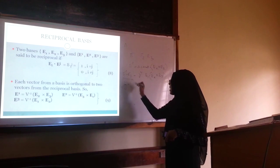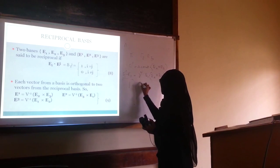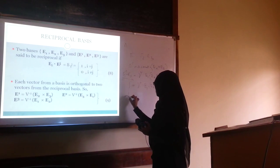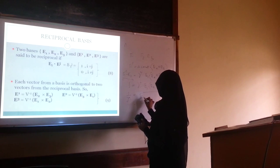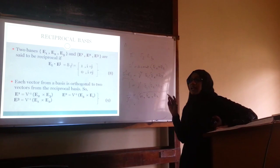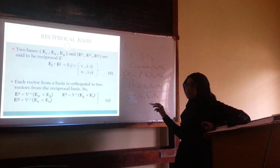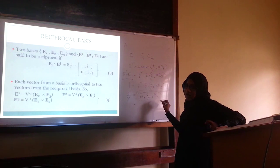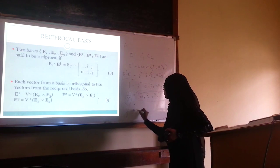So 1 = γ·(E1·(E2 × E3)). Rearranging, 1/γ = E1·(E2 × E3). This expression is nothing but the scalar triple product, which by definition equals the volume V of the parallelepiped formed by these three vectors when their origins coincide. Therefore, 1/γ = V.